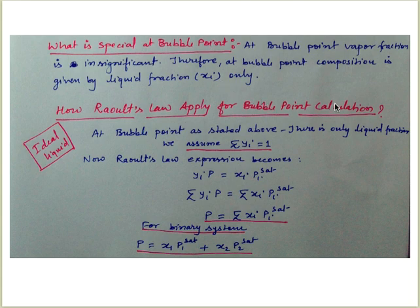How does Raoult's Law apply for bubble point calculations for an ideal liquid? At bubble point, as stated, there is only liquid fraction, so we assume sigma y_i equal to 1. For ideal liquids, using Raoult's Law, this becomes P equal to sigma x_i * P_i_sat.